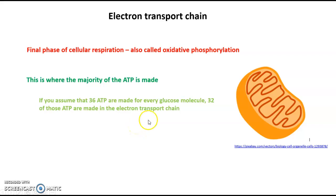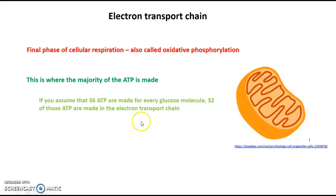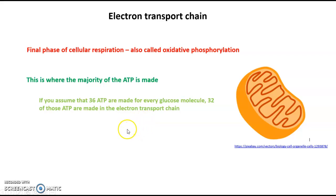Usually there is a range of ATPs given that are made for every glucose molecule, and this is because the process is so indirect that depending on the conditions, there can be a different amount of ATPs made for different glucose molecules.